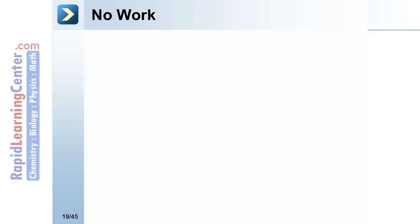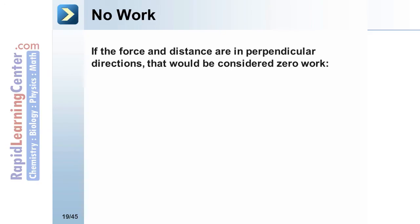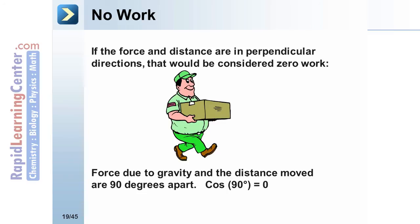No work. If the force and distance are perpendicular to each other, that would be considered zero work. Consider a person exerting an upward force to lift a box, but they are moving horizontally to move the box. In this example, the angle between the force and the distance moved is 90 degrees. Cosine of 90 degrees equals zero. So, regardless of the force or distance moved, this example is zero work. Note the direction of the vectors.